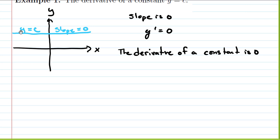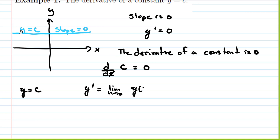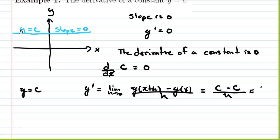In symbols, using Leibniz notation: d/dx of C is equal to zero. The derivative of a constant is always zero. If we verify using first principles: y prime is the limit as H goes to zero of [y(x+H) - y(x)] / H. Since y equals C, no matter what we put in, we always get C out. So we get (C minus C) over H, which is zero divided by H, which is zero. Both graphically and by first principles, we get the same result.